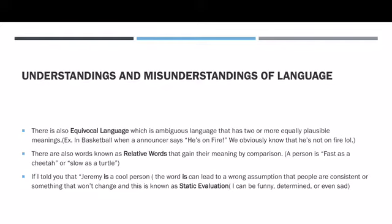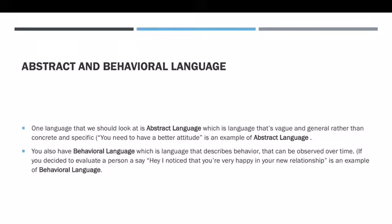In this chapter, we're talking about language, and one language we should look at is abstract language. Abstract language is language that is vague and general rather than concrete and specific. For example, if I say 'you need to have a better attitude,' that's saying in general that if you have a better attitude, you'll become a better overall person. Speaking in general terms, if you can change your attitude, then you can become a better overall person in life.